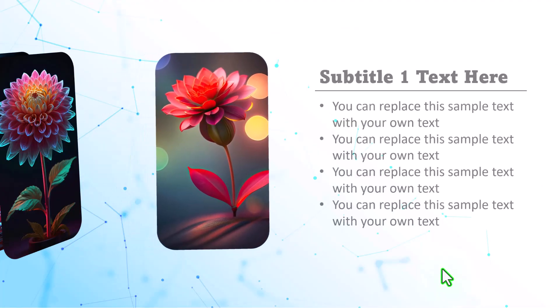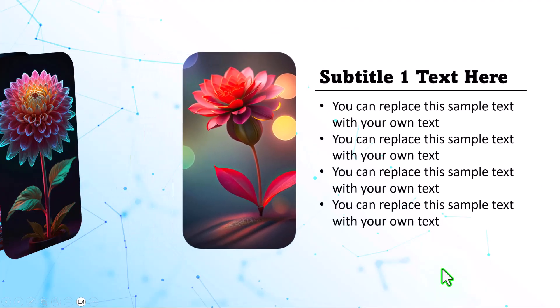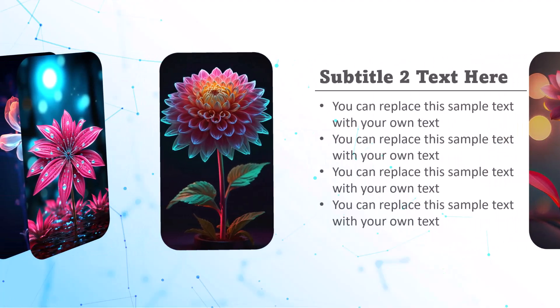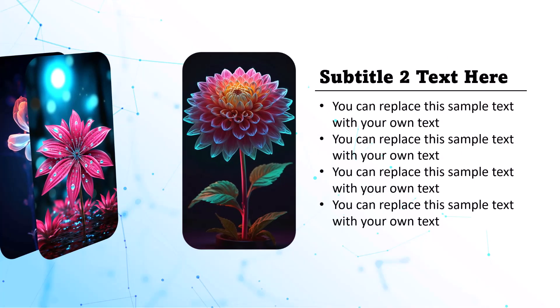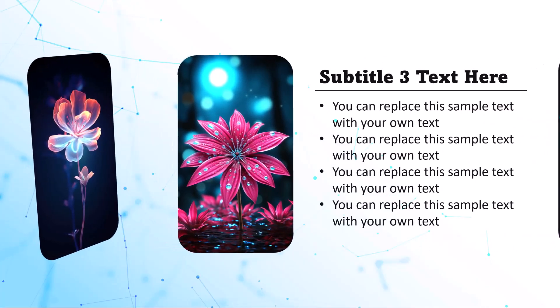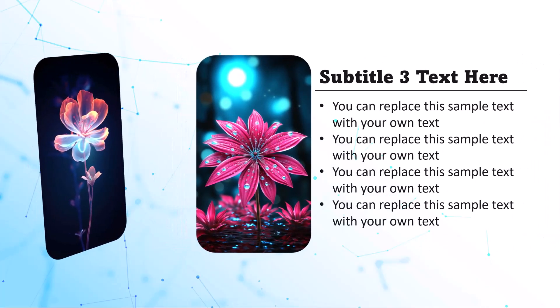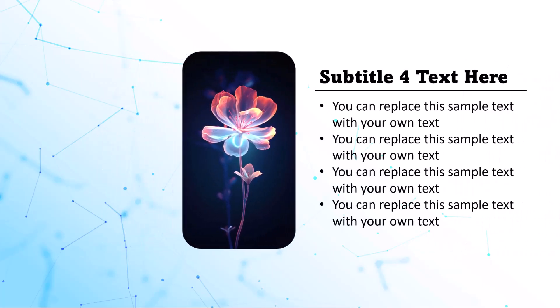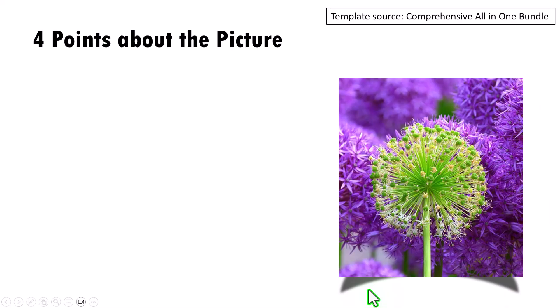You can see we now have a background across all slides. Go to the first slide and run the slideshow. On each click, the first photo is explained, then the second, then the third, and finally the fourth — all with smooth morph transitions.